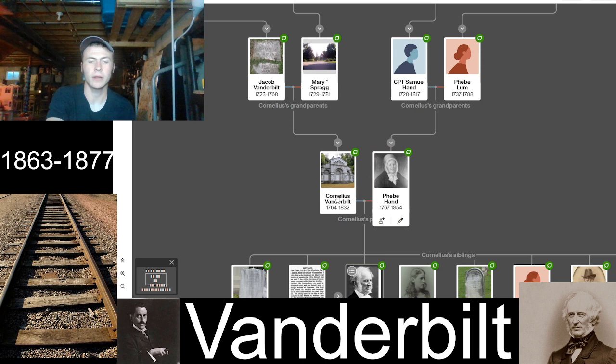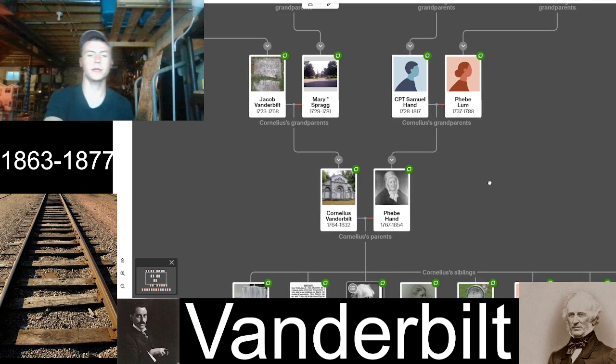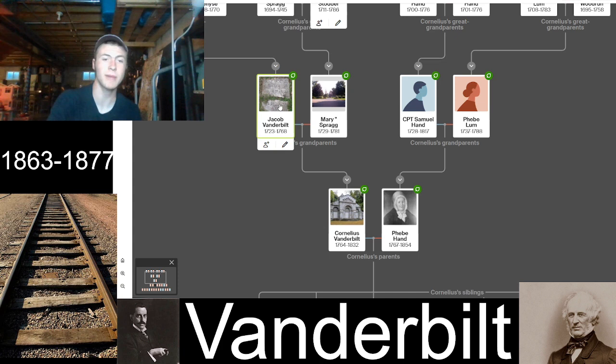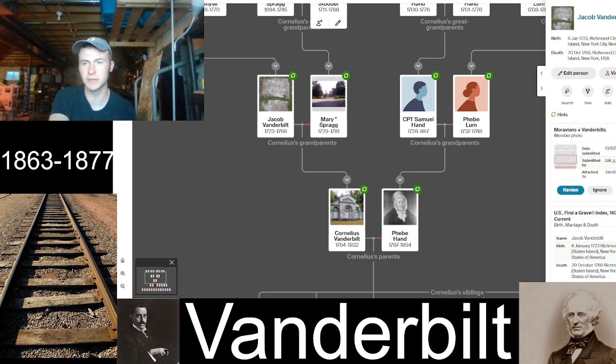Now going up the line, we'll look at Cornelius Vanderbilt's four grandparents. His paternal grandfather was Jacob Vanderbilt, born January 1723 in Richmond City, Staten Island — born in New York but had his son in New Jersey — and died in New York in October 1768.